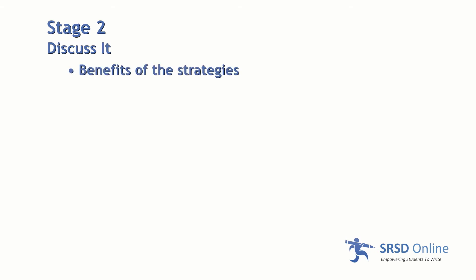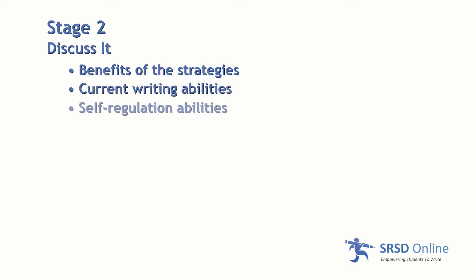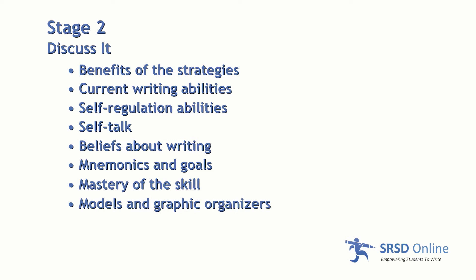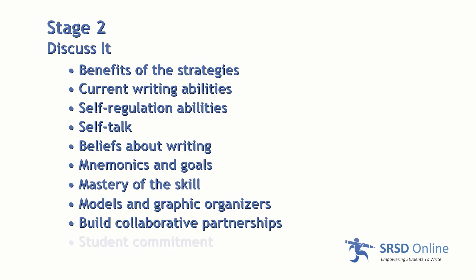Some of the important aspects of the second stage, Discuss It, are that we discuss the significance and benefits of the self-regulation strategies we want to develop. We focus on students' current writing and self-regulation abilities — what they say to themselves, their attitudes, and their beliefs about writing. All steps in the writing process are discussed, including mnemonics and goals. A key premise in SRSD is that we want mastery of skills and we expect it. We use models and graphic organizers to help students determine the difference between an effective and an ineffective essay. It's also critical at this stage to build collaborative partnerships and to get student commitment to the task.